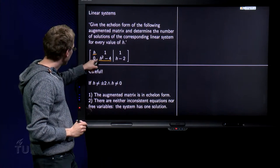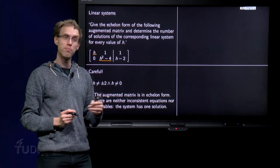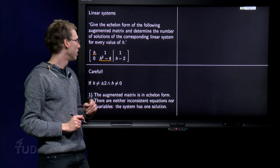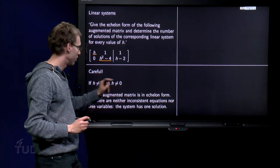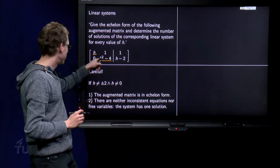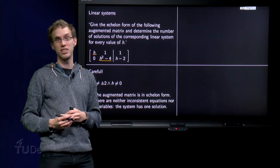Well, if this value is not equal to zero, we have a pivot. If this value is not equal to zero, we have a pivot. So if h is not plus or minus 2, or if h is not equal to zero, that means we have pivots in every row, so we won't have inconsistent equations.